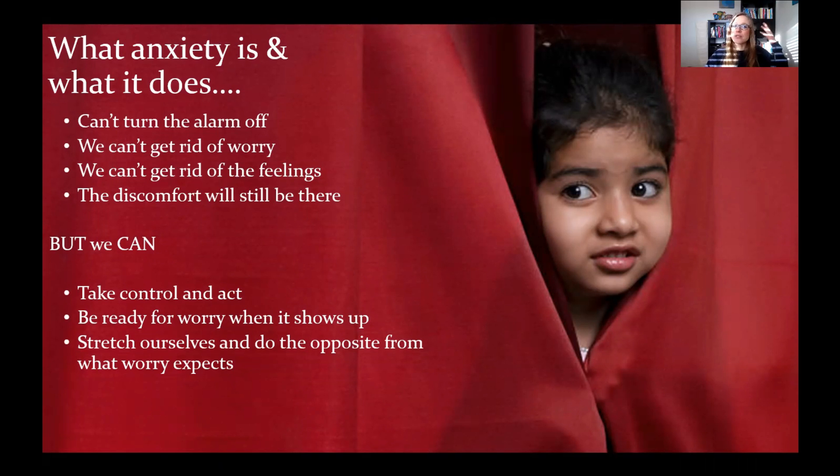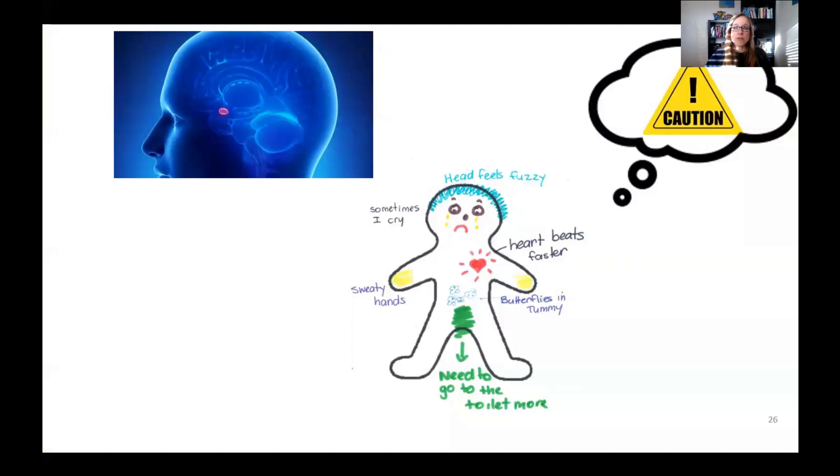Those alarms are way more sensitive and they're going to go off way more easily than other times. And all of those gross feelings come in. We're still going to feel uncomfortable, but guess what? We can change how we respond to those worries. We can take control and do something about it. We can be ready for whenever those worries show up and start to do brave things. And brave things that our anxiety, that trickster amygdala isn't going to expect us to do. So we can start to work on those skills that are going to help us surprise worry in the first place. And that's how we are going to become masters of anxiety. So we can't turn that alarm off. We can't get rid of the worry, but we can change how we respond to it. And that's going to be really important for us to know.